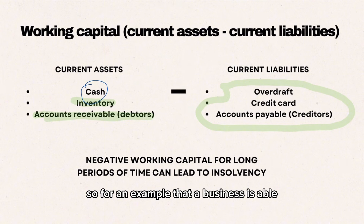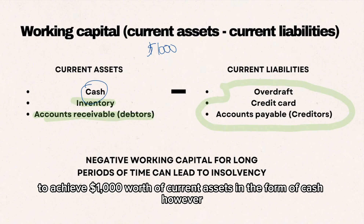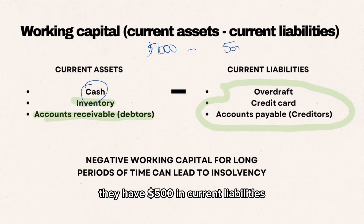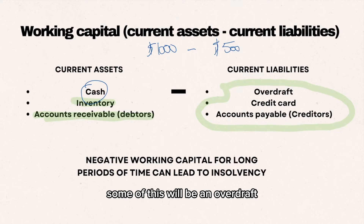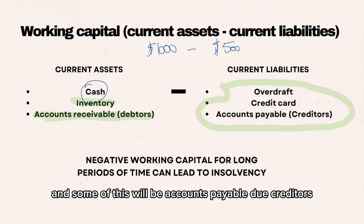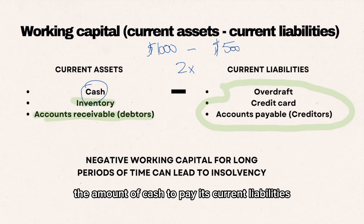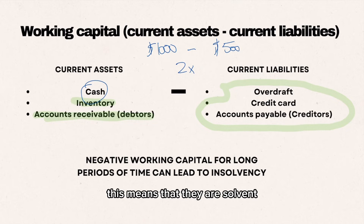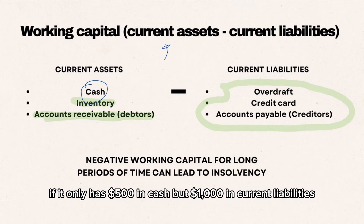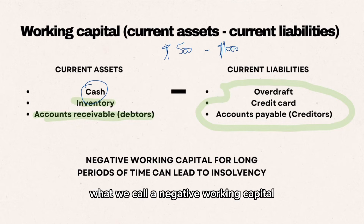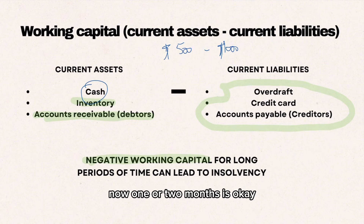For example, if a business achieves one thousand dollars in current assets in the form of cash but has five hundred dollars in current liabilities — some as an overdraft, some as credit card bills, and some as accounts payable to creditors — then the business has over twice the amount of cash to pay its current liabilities, meaning it is solvent. On the other hand, if it only has five hundred dollars in cash but a thousand dollars in current liabilities, it is operating at a negative working capital. One or two months is manageable, but over a long period this can lead to business insolvency.